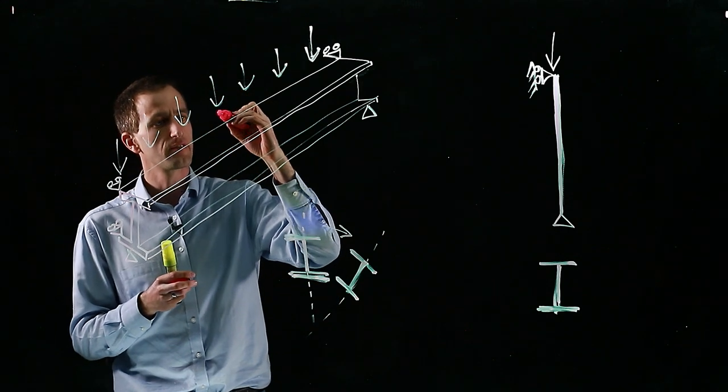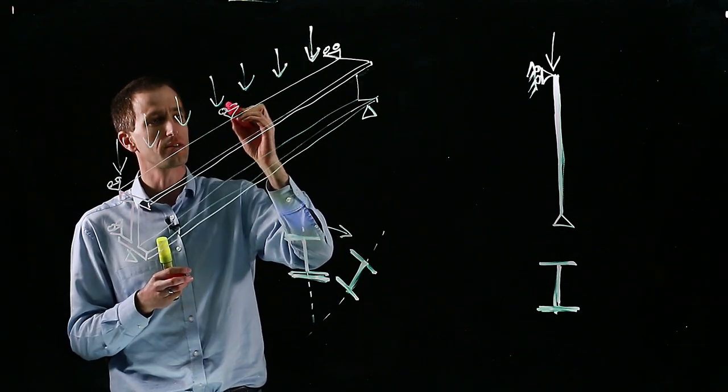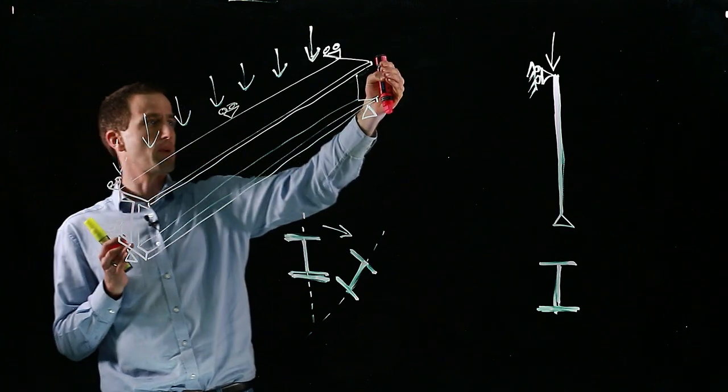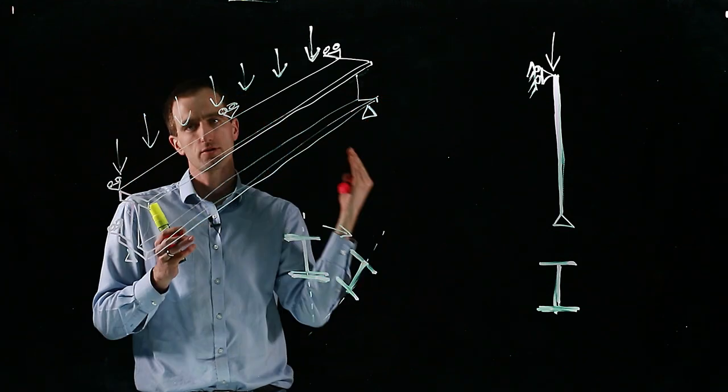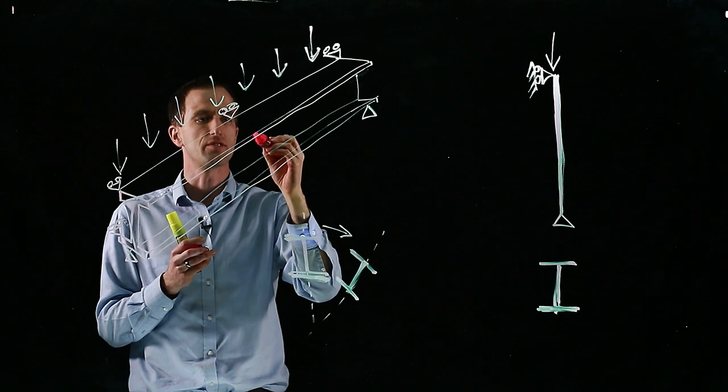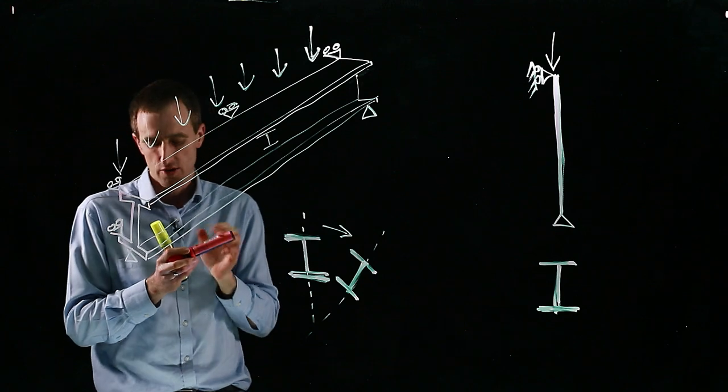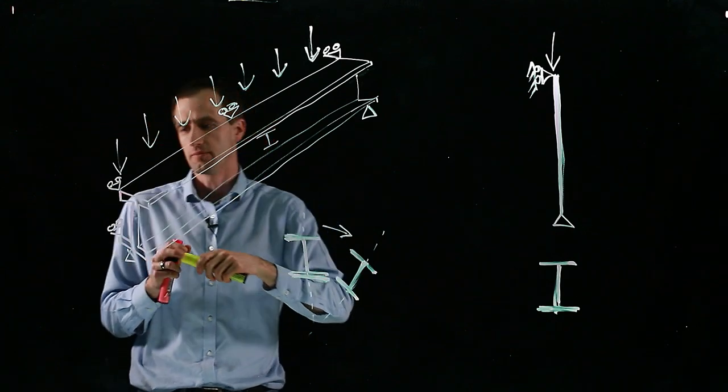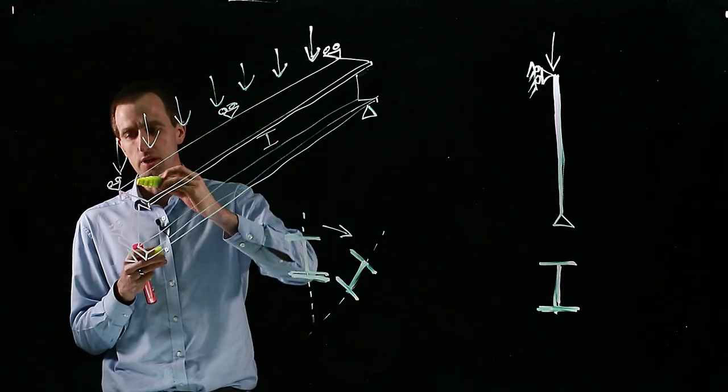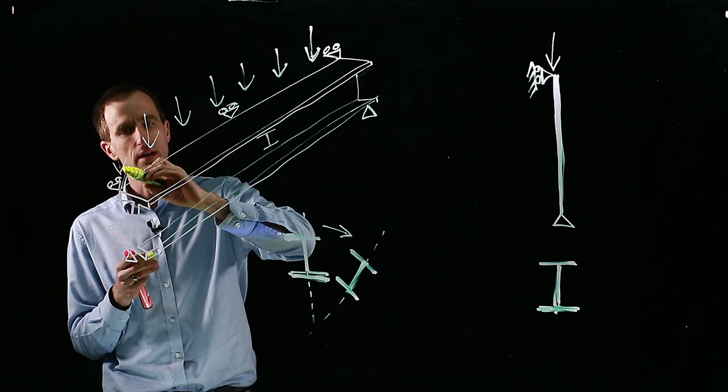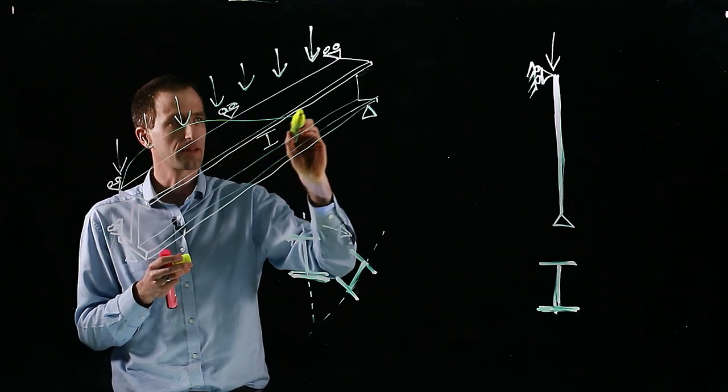For instance, we often have beams connected into the side of this. So if this was spanning 10 meters, we might have another secondary beam coming in at five meters into the side of it. And that would provide some sort of lateral support and prevent buckling. So when we look at the buckling behavior, at the time it buckles, if you were to look at it, it would probably do something like that.